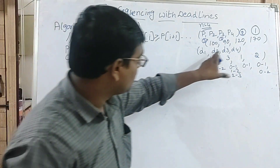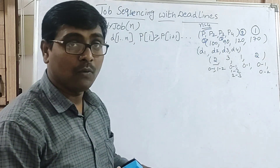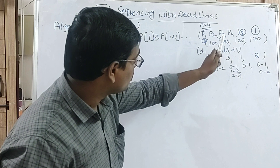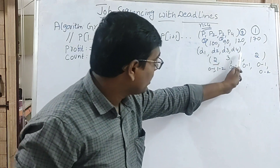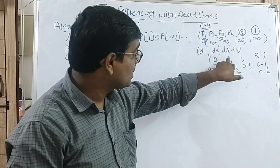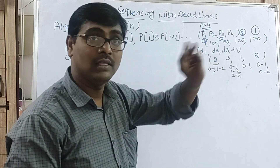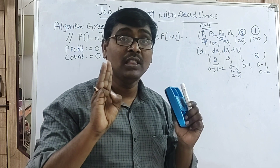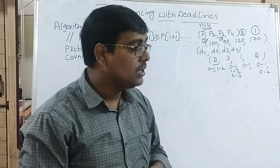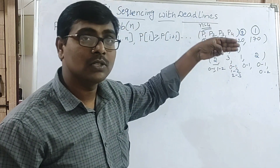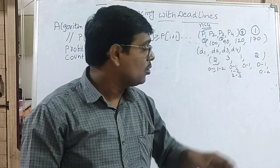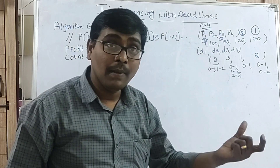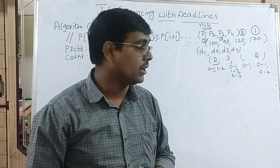Observe that the deadlines are 2, 3, 1, and 2. The maximum deadline is 3. That means we have a maximum of 3 slots, so only three jobs can be executed at most. Whatever the maximum deadline, only that many jobs can be executed at maximum.